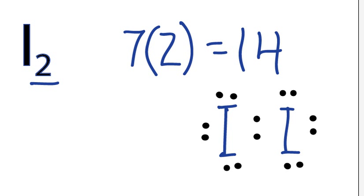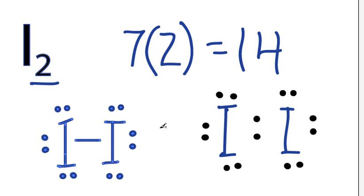We could also draw it, if we wanted to, as a structural formula. And that would look like this right here, where these two bonding electrons are represented by this single line right here. So that line means 2 valence bonding electrons.